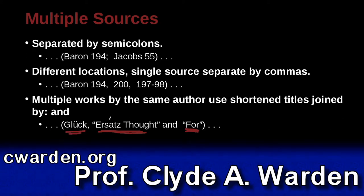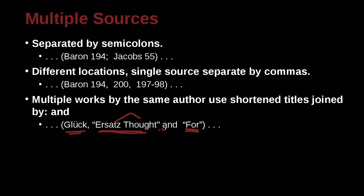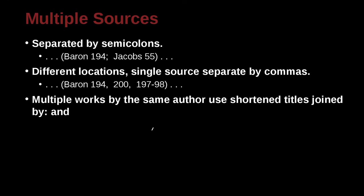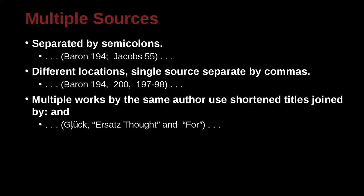Now, this is not the whole name of the paper, but what we do is we just use the first or second word to help us see that it's different. So Gluck has one paper called Ersatz Thought, something, something, something. And another paper called For, something, something, something. We don't know what. We need to look at the reference list. But you see, this helps us to tell that these are two papers, two research papers or two books by Gluck, but they have different names. And I'm citing them in one parentheses here. So I have two different papers I'm citing. One paper, two paper, one author.